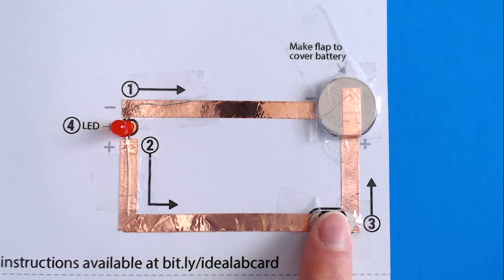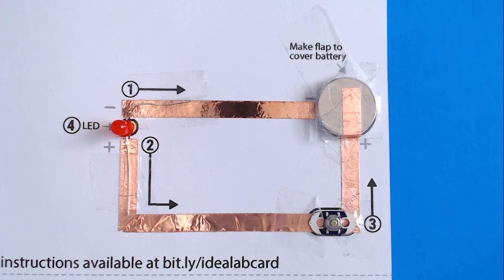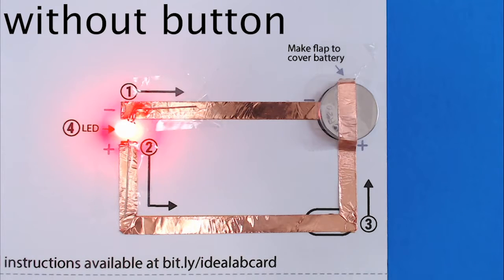We've also included a button in the circuit so you can turn the light on and save some battery power when you aren't using it. If you don't want to use a button, you'll have one line of copper tape going directly to the LED from the battery.